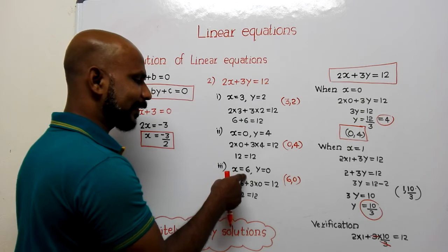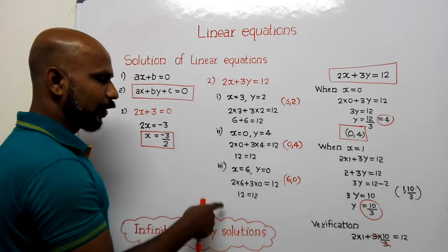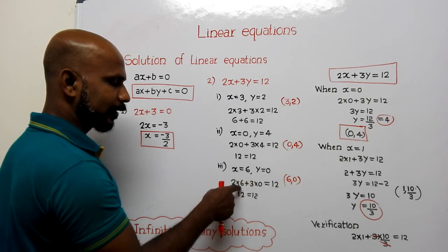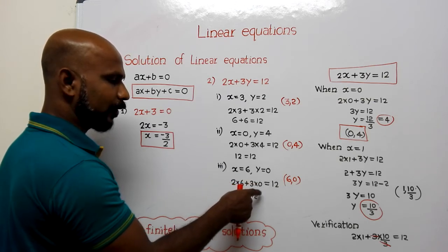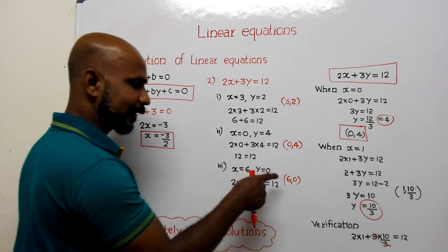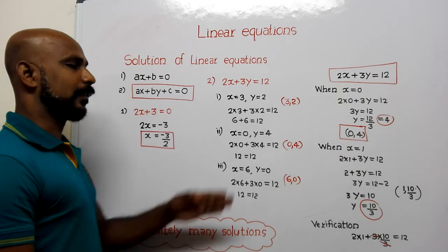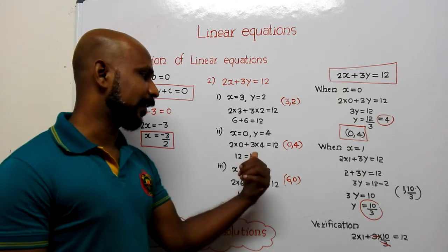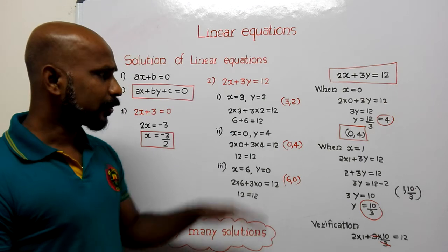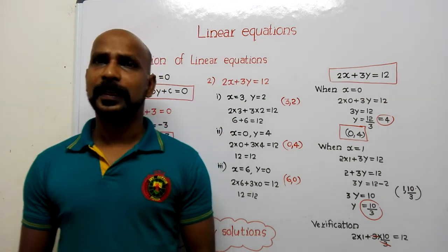Next, I selected x equal to 6 and y equal to 0: 2 into 6 plus 3 into 0 gives 12 plus 0 equal to 12. So x equal to 6 and y equal to 0 is another solution of this linear equation in two variables. These solutions were found by the guessing method, but now we will learn how to find solutions in a proper systematic way.